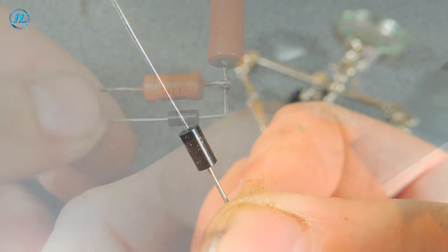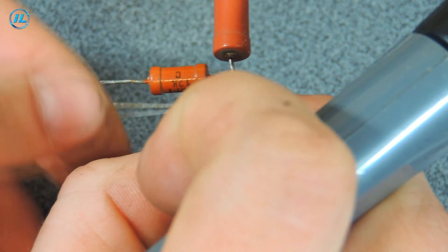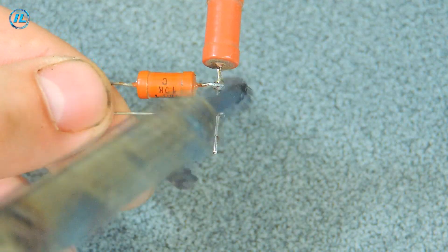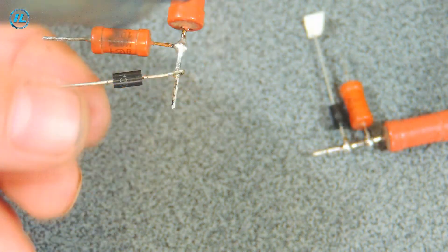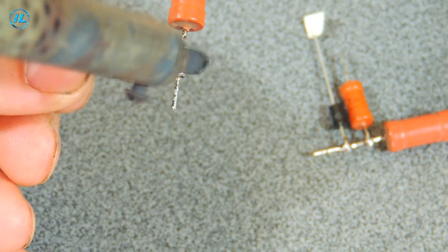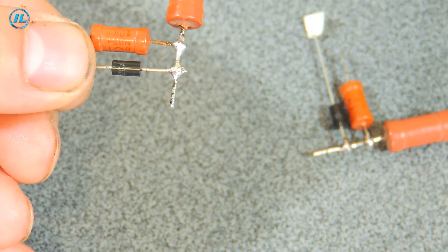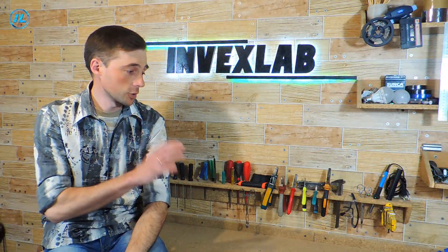Also, I will immediately solder suppressors to the resistances, that is, protective diodes. I decided to assemble this scheme by hanging mounting. And then, when it is finalized and verified, it can be transferred to the printed circuit board.